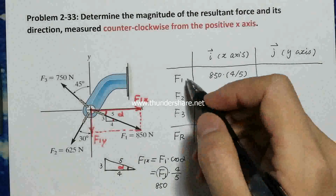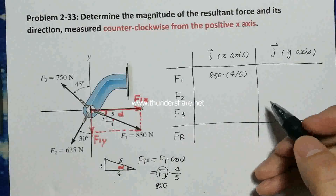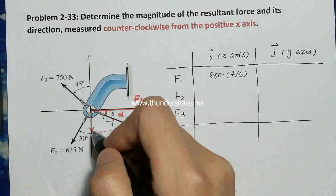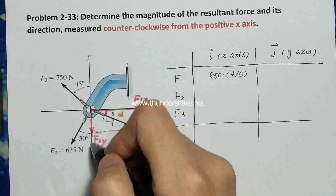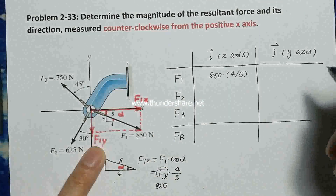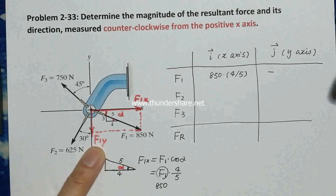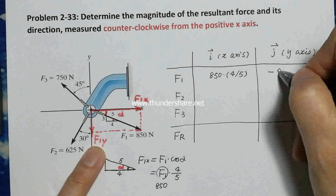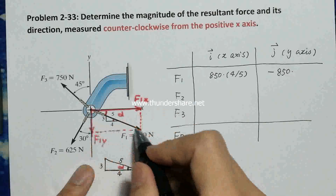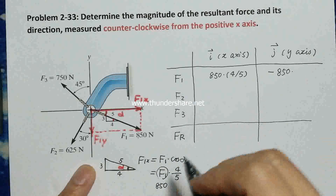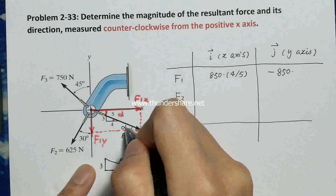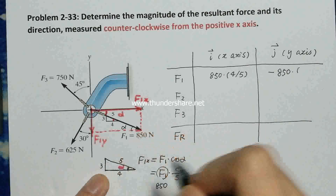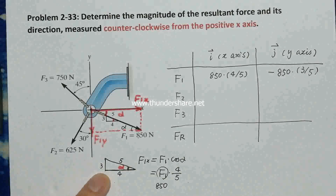Now we check the y-component for F1. We need to check the direction first. F1y is pointing in the opposite way — pointing to the negative y-axis. So we put a minus sign first. The magnitude is 850 times sine alpha, and from the small triangle sine alpha equals 3 divided by 5. That's F1 done.